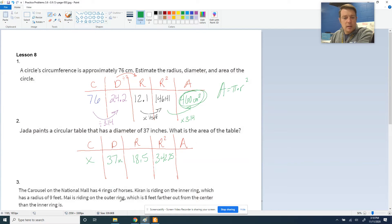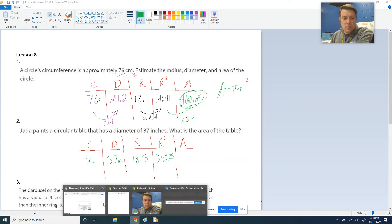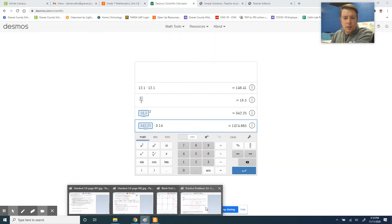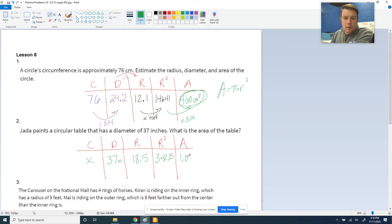And then multiply it by pi to get to the area. Square the radius, multiply it by pi. So I'm going to take that answer and multiply it by pi, and I will have my final answer, which is, let's go with 1,075. 1,075 inches squared. Here's our answer for that one.